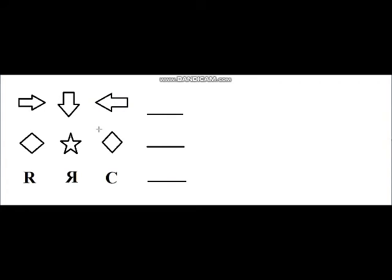So now we are on the second activity — Brain Gym second activity. What you have to do? I have drawn something: this is your arrow, this is again one arrow, this is again one arrow, and the fourth space is blank. You have to put one arrow. But in which direction will the arrow go? The arrow is going right, then down, then left — so now where will the arrow be? Draw this in your notebook. Also: if this is your diamond shape, then star shape, then diamond shape, then which shape will be next? You have to think, draw, and send it on my personal number.